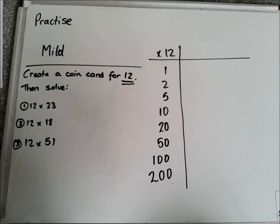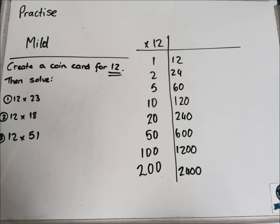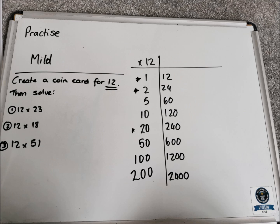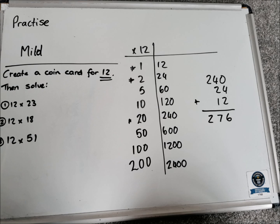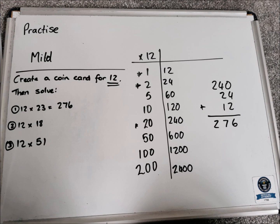Okay, hopefully you've had time to work through these problems, so let's work through the answers together. I'm going to do mild first — we're creating a coin card for 12. Our answers should be looking like this for the coin card for 12. If you haven't got the coin card correct, pause the video now. The first question was 12 times 23 — to make 23 I use 20, 2, and 1. Adding 240, 24, and 12, I get 276. So 12 multiplied by 23 is 276.